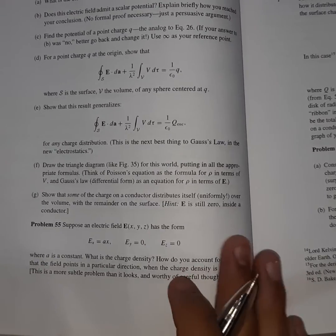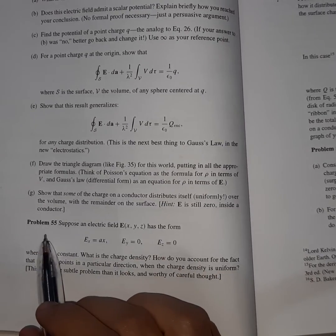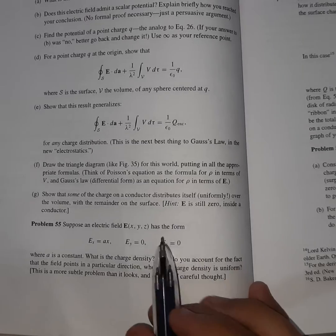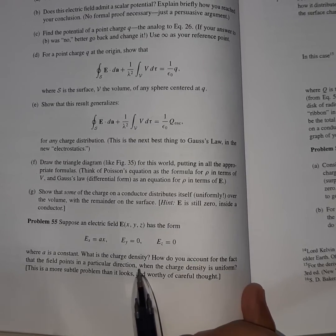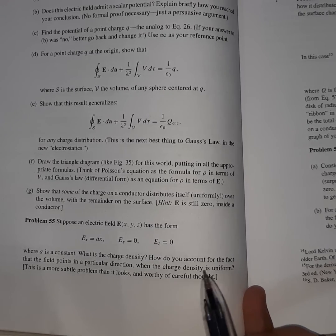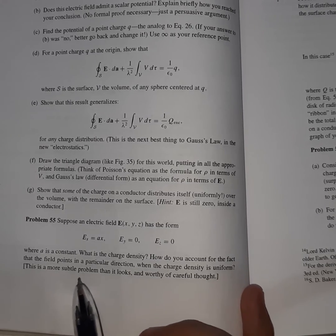Hello everyone, welcome back. Now let us discuss Problem 55, which says suppose an electric field has the form where a is constant. What is the charge density, and how do you account for the fact that the field points in a particular direction when the charge density is uniform?